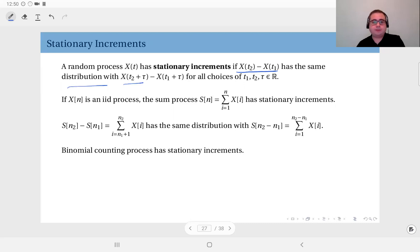That means if you shift the time origin, if the increment between the two time instances has still the same distribution for any choice of t1, t2 and tau, then X(t) has stationary increments.